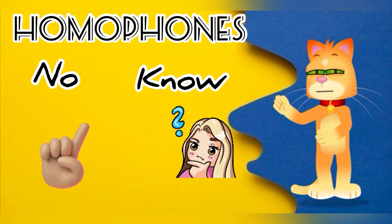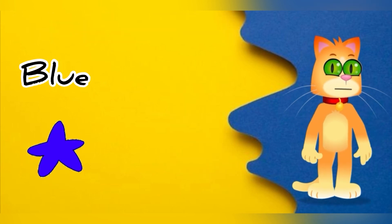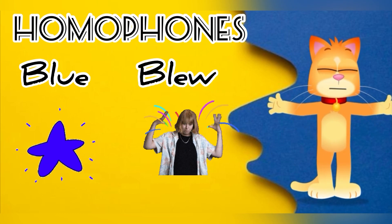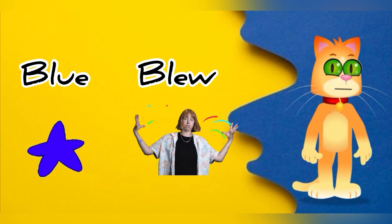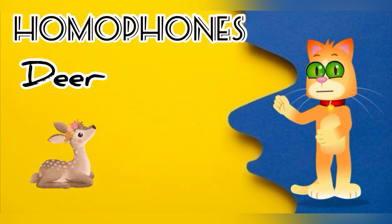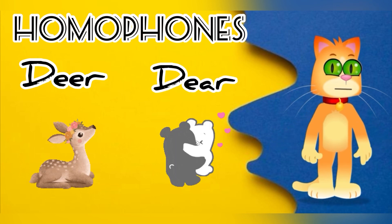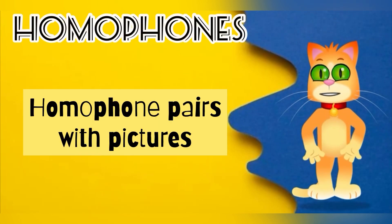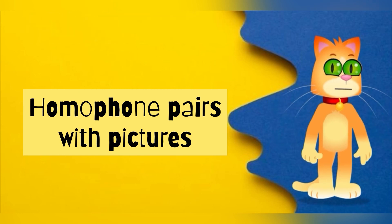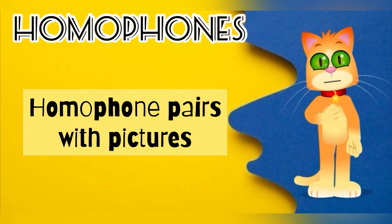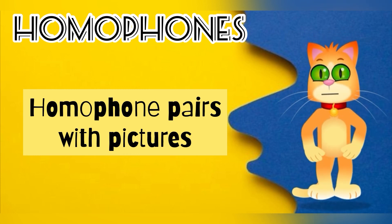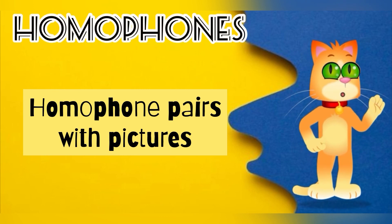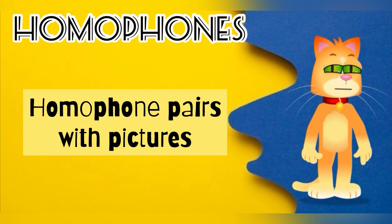Know: K-N-O-W. Blue: B-L-U-E. Blew: B-L-E-W. Dear: D-E-A-R. Deer: D-E-A-R. We need to understand their meaning clearly, which helps us understand the difference between the two words with similar sound.